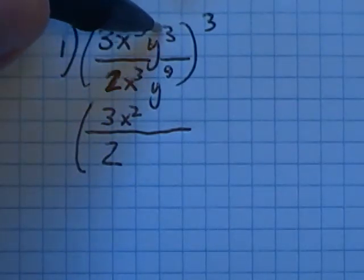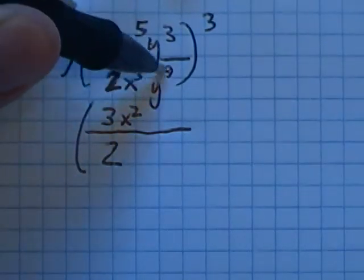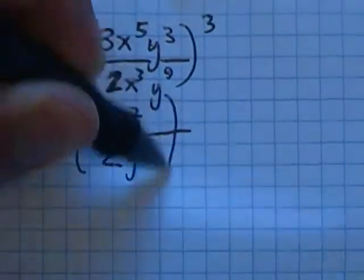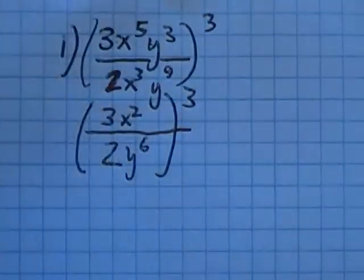y cubed over y to the 9th. These 3 y's divide out 3 of these, leaving me 9, I'm sorry, 6 of these y's in the denominator, and that whole thing is still cubed.